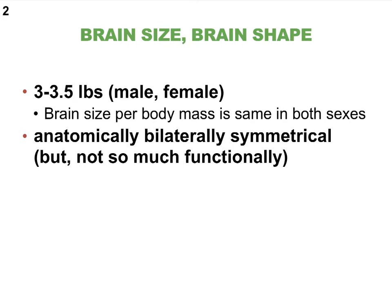But when we look at the functions of the different parts of the brain — left side versus right side — there's a little bit of variation. There's still some symmetry when it comes to functions, but for instance, in most of us, our left side has language areas that the right side doesn't. So when we talk about language areas, we're talking about functional areas, and I'll explain this better as we go.